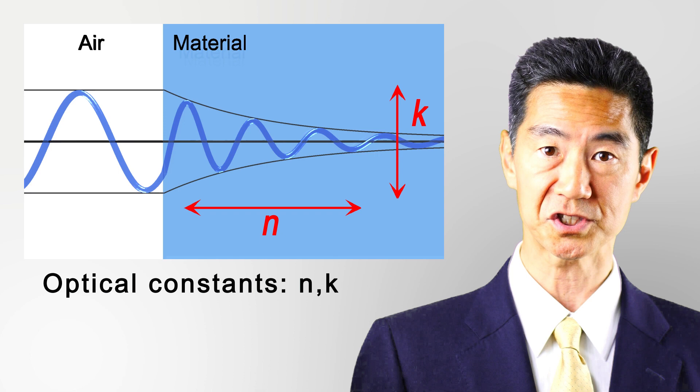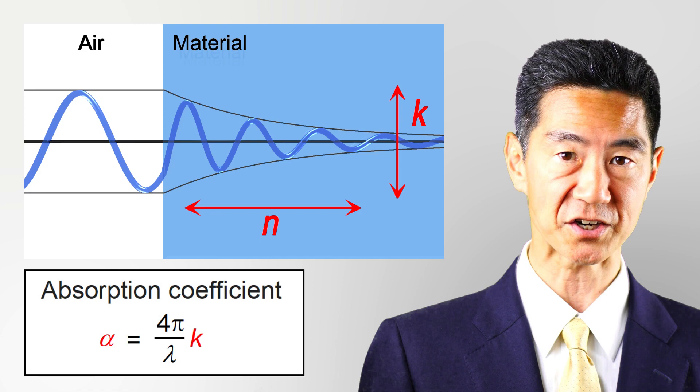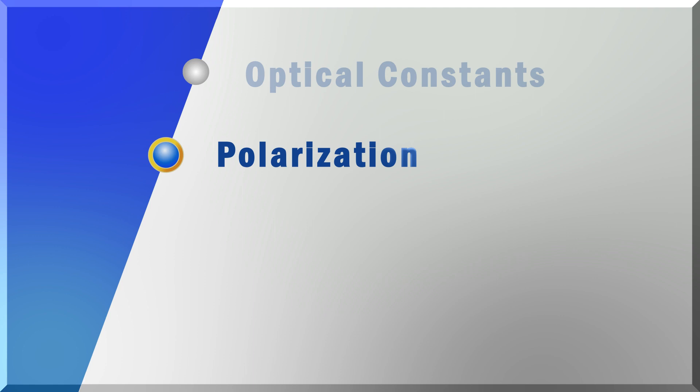Ellipsometry is an optical instrument that determines the optical constants of materials. The well-known absorption coefficient alpha is also calculated from k using this equation.